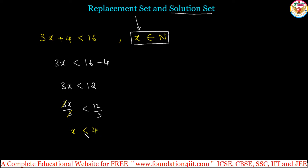Since the replacement set is natural numbers, therefore, solution set only we should choose the numbers from the natural numbers. x is less than 4. Less than 4 is only 3, 2, 1. 0 should not be because 0 does not belong to natural number. So, solution set is which is chosen from the given replacement set.